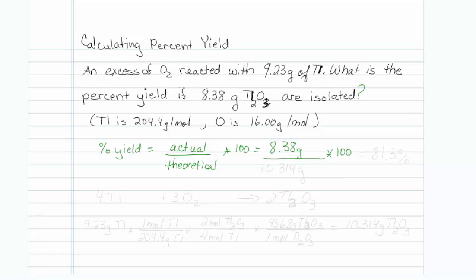So once again, we have to do a mass to mass conversion. To do this, it would be helpful to have the balanced reaction. Thallium reacts with O2 to give a compound called thallium 3 oxide.